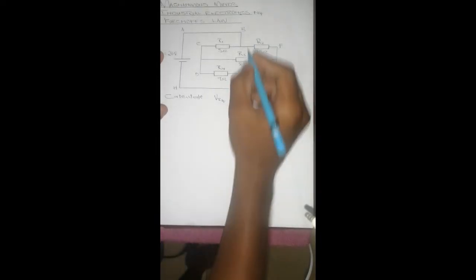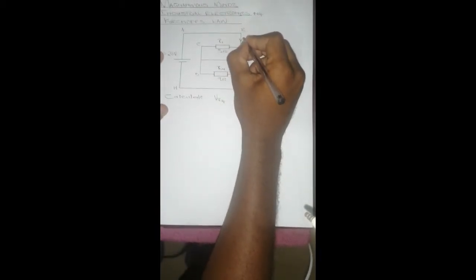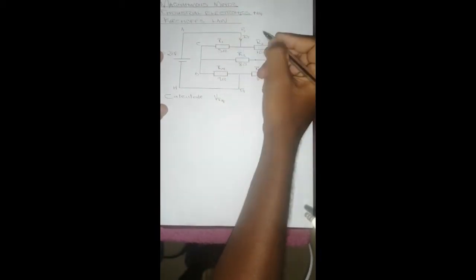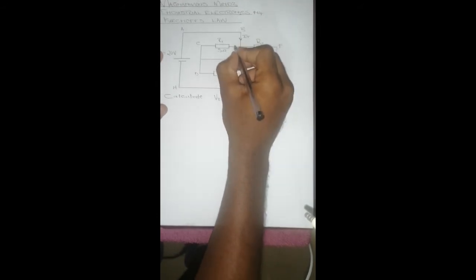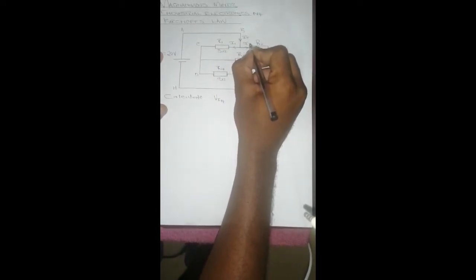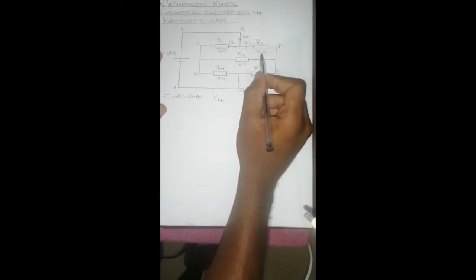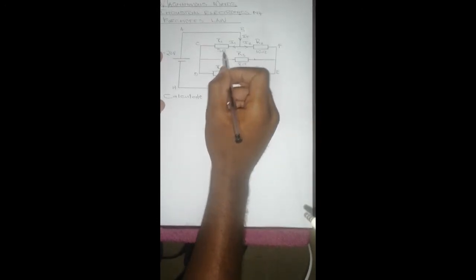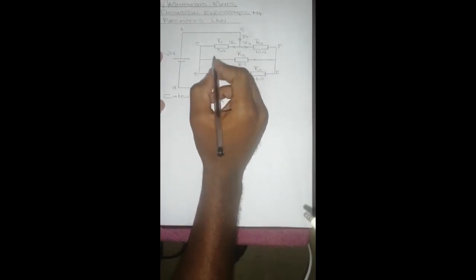We've got a total here. It's going to split to this branch and this branch, and then this is going to be I1, this is I2. And then since this is 10 and this is 5, more current is going to come this side.